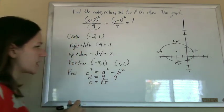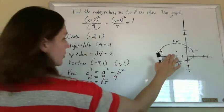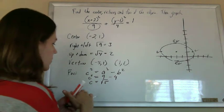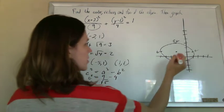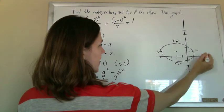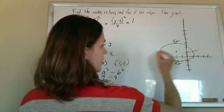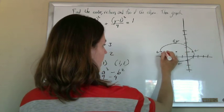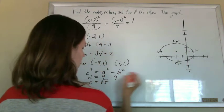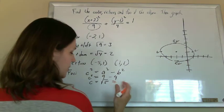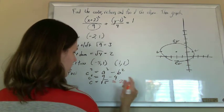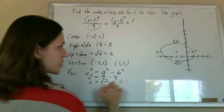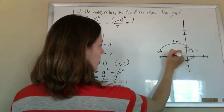Now what c represents is the distance from the center to the focus. And it's always on the same axis as the vertices. So if the vertices are going this way, I'm going to go this way, root 5, and that way, root 5. So for our graph, we approximate the 5 as just a little, the square root of 5 is just a little bit more than 2, because it's just a little bit bigger than the square root of 4, which is 2. So 2 over here, there's a focus there.